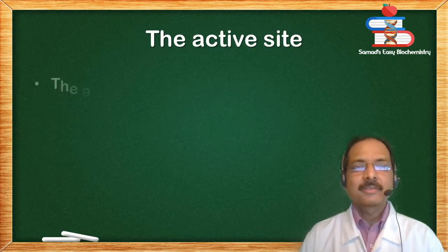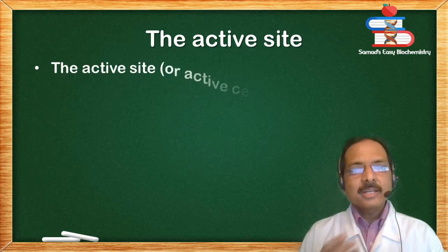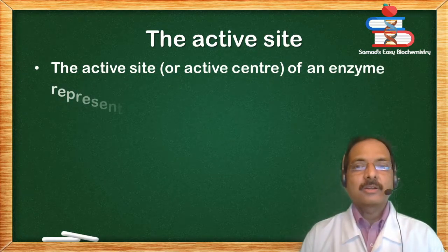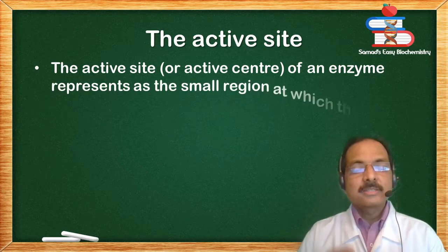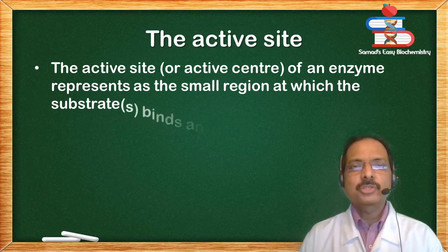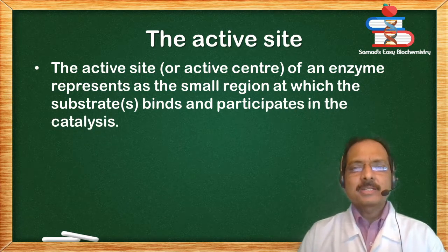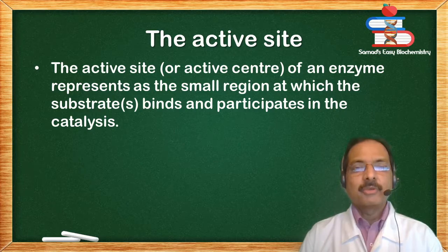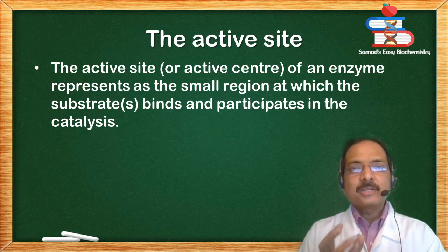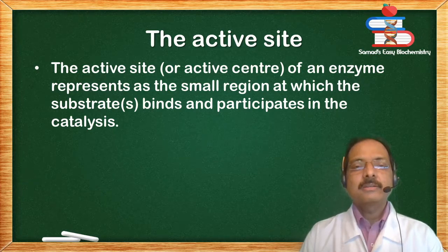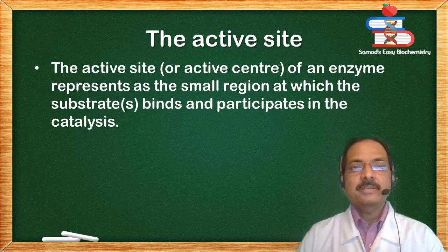The active site or the active center of an enzyme represents the small region at which the substrate or substrates bind and participate in the catalysis. In a very big enzyme, this site could be a small site known as the catalytic center, catalytic cleft, or pocket active site.